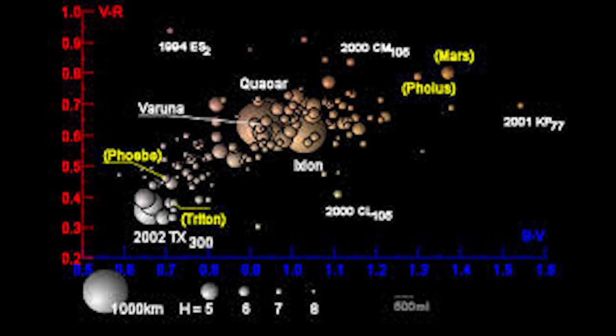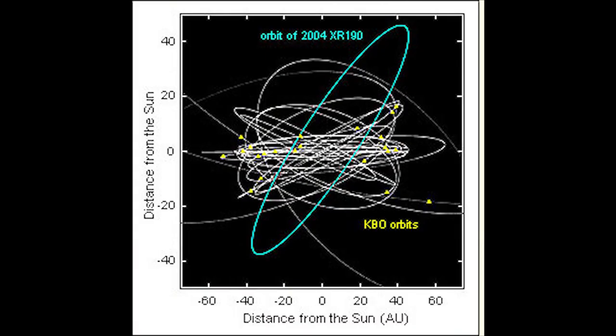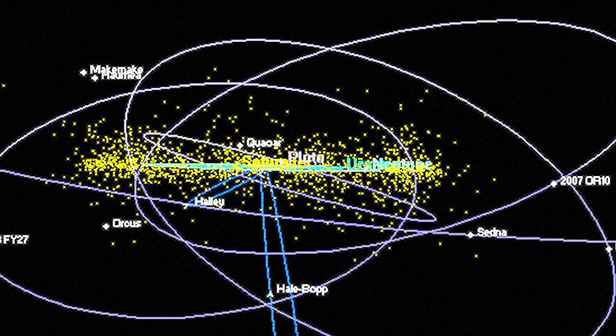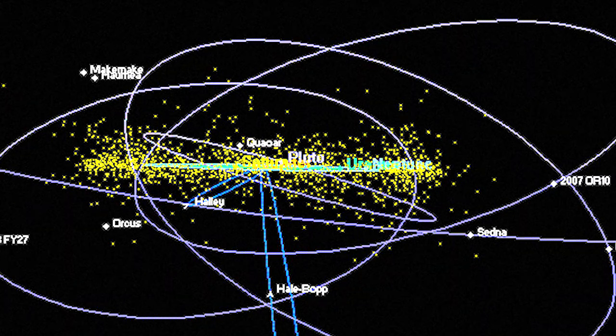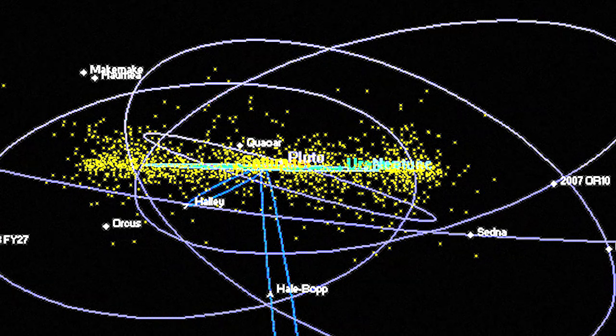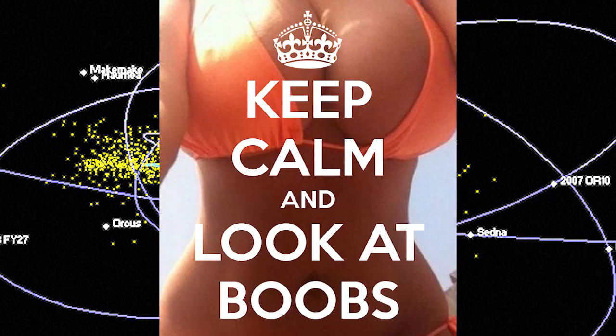My favorite is Sedna, found by Mike Brown - he's my favorite modern astronomer. He's the one who found most of these badass planets in our solar system. Sedna has a 12,000 year orbit. You have to be super badass to have a 12,000 year orbit - you have to clear everything in your orbit.